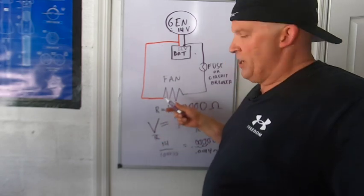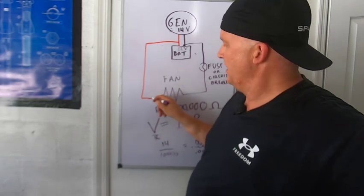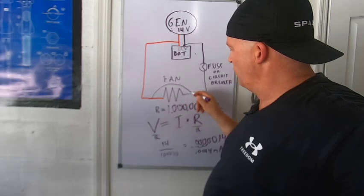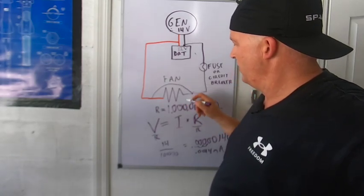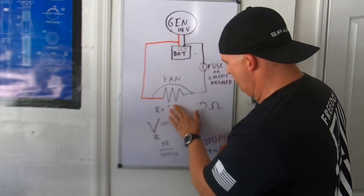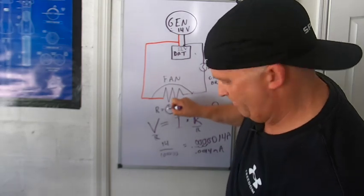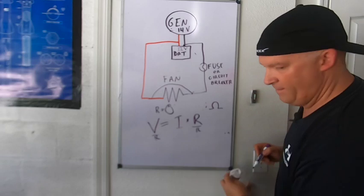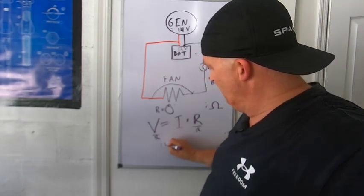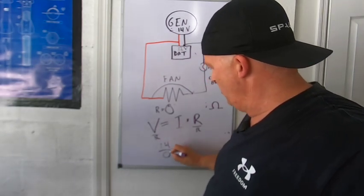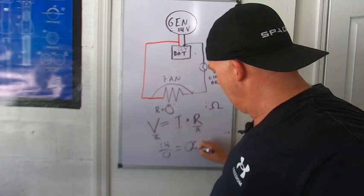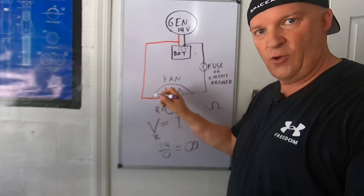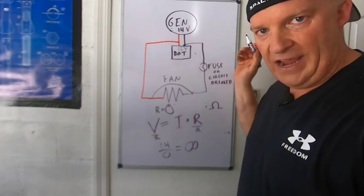So what happens is if a wire inadvertently crosses over here, guess what? Resistance goes to 0 and your voltage remains the same at 14. 14 divided by 0 equals infinity. So we have infinity current going through here, which melts everything.